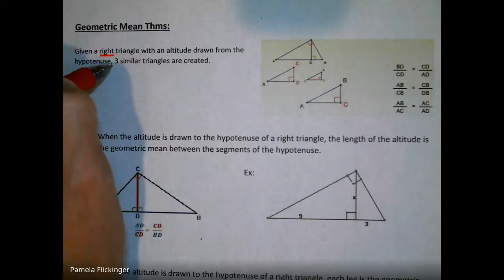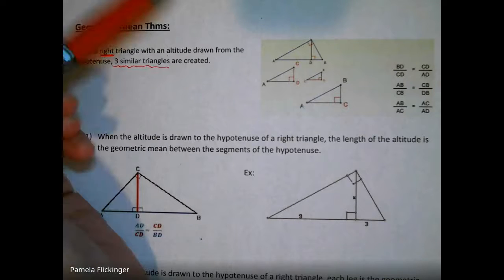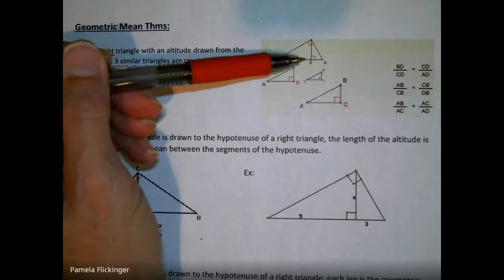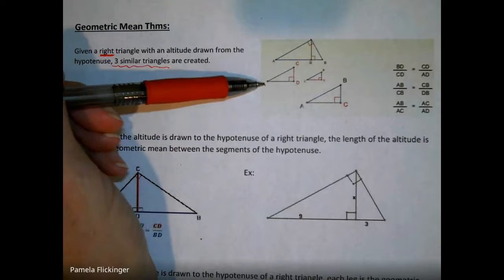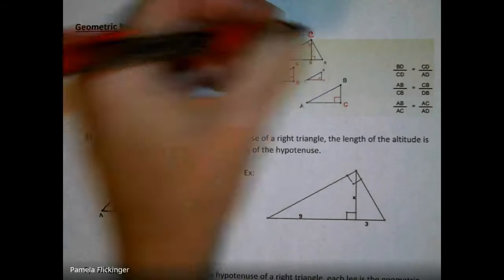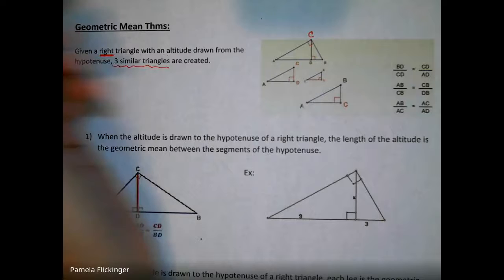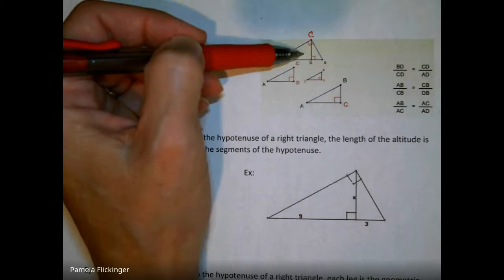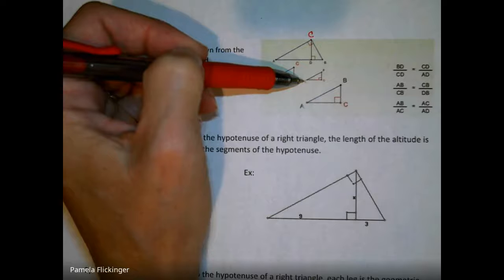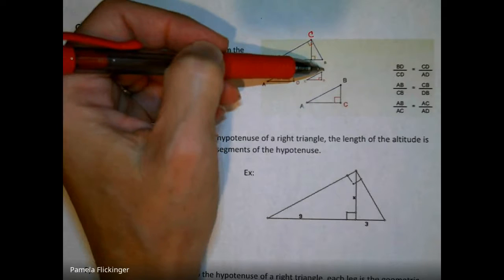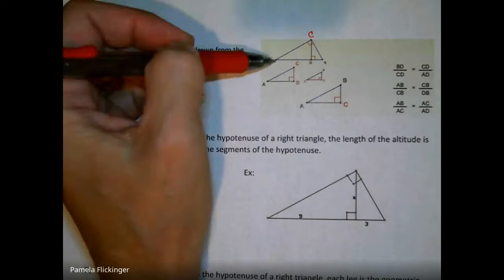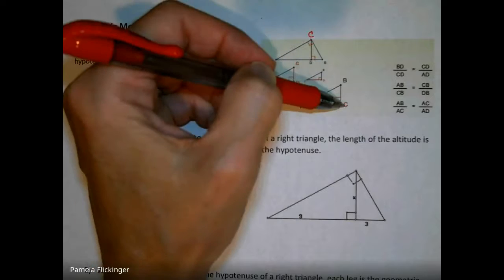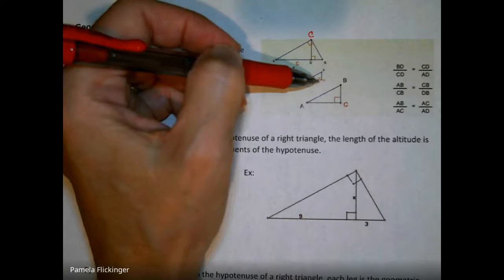So it's the altitude drawn from the right angle to the hypotenuse. When you do that, three similar triangles are created. This picture helps you see it: we've got the right triangle on the left side — triangle ACD — the smaller right triangle on the right side — triangle CBD — and then the larger right triangle, triangle ABC. You can see how all the right angles match up.